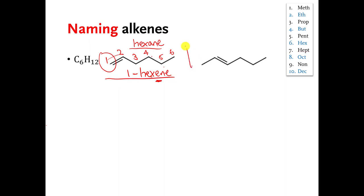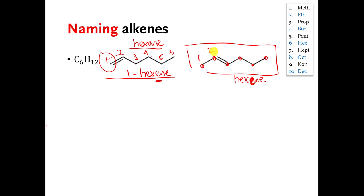You can pause the video and think about what this one would be called. We number the carbons — there are six of them — so this molecule is also going to have hexene in its name. We number the carbons from whatever end makes us hit the double bond first: one, two, three, four, five, six. The double bond starts at number two, so that molecule would be called two-hexene instead of one-hexene. That is the extent of naming rules for alkenes — I will not add branches or side chains.